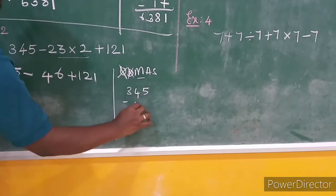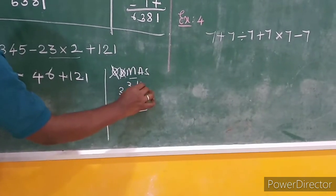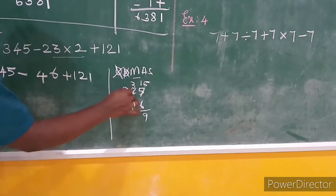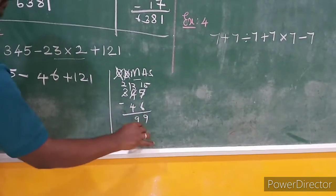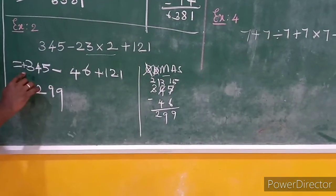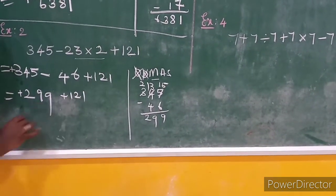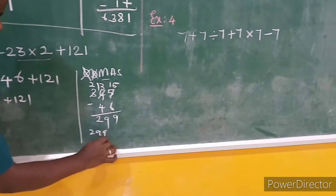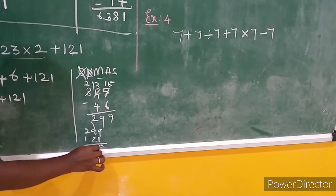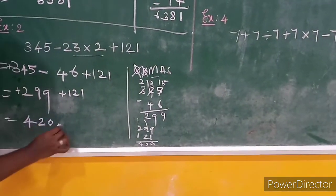Now only addition and subtraction remain, so use the integer rule. 345 minus 46: 5 minus 6 not possible, borrow — 15 minus 6 is 9, 3 minus 4 not possible, borrow — 13 minus 4 is 9, so 299. Bigger integer is 345, sign is plus, so 299 plus 121: 9 plus 1 is 10, carry 1; 9 plus 2 plus 1 is 12, carry 1; 2 plus 1 plus 1 is 4. Answer is 420.